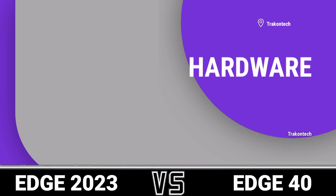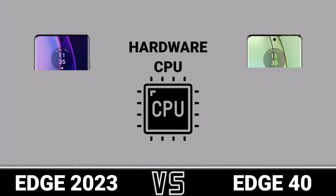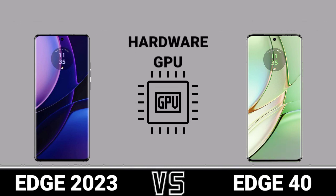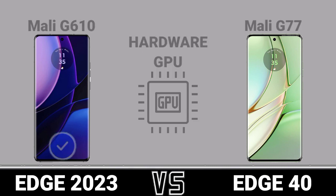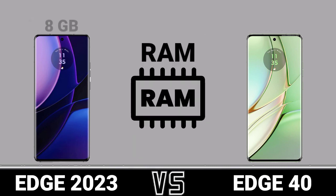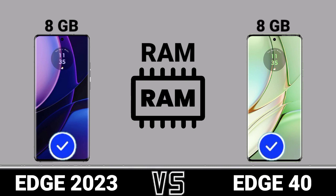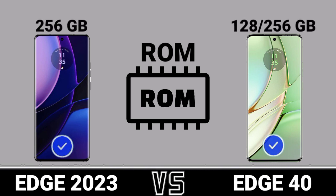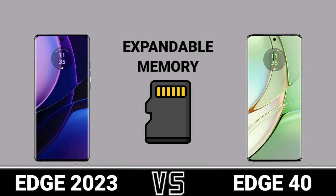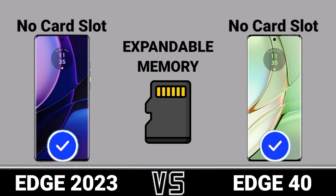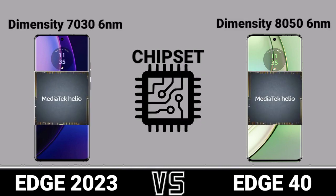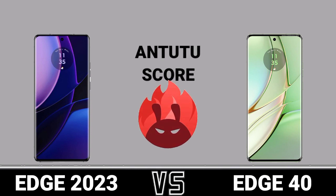Hardware: CPU, GPU, RAM, RAM ROM, Expandable Memory, Chipset, Core count.